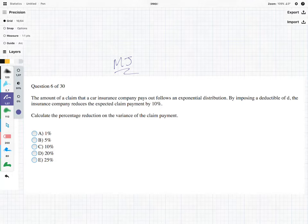The question says the amount of a claim that a car insurance company pays out follows an exponential distribution. By imposing a deductible of D, the insurance company reduces the expected claim payment by 10%. Calculate the percentage reduction on the variance of the claim payment.